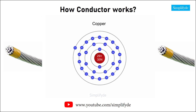The copper atom has 29 positively charged protons and an equal number of electrons in various shells orbiting its nucleus. After filling the first shell with two electrons, the second with eight, and the third shell with its maximum 18 electrons,